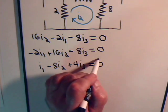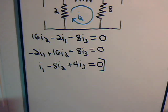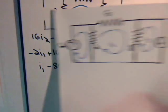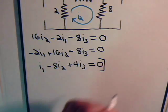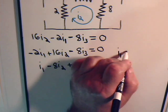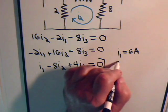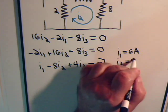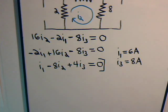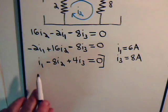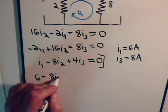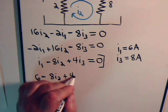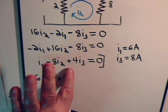This is our mesh current equation and again we know I1 is 6 amps and I3 is 8 amps. All we have to solve for is I2 so I1 is 6 so we have 6 minus 8 times I2 plus 4 times I3 that's 4 times 8 that's 32.